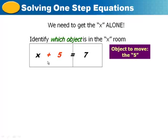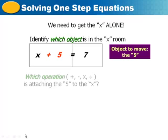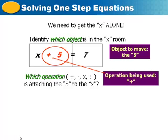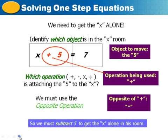So in this room we have plus 5. In order to get rid of plus 5, we have to figure out which operation is attaching it. We already said that it's addition, so what we're going to do is subtract 5 from both sides of the equation, or from both rooms, so that x can be by itself.